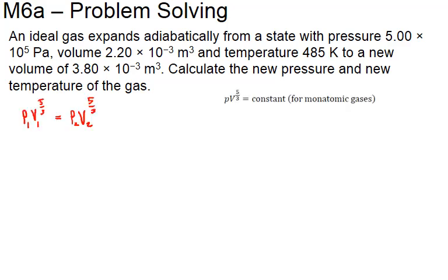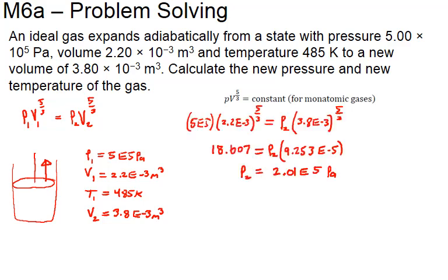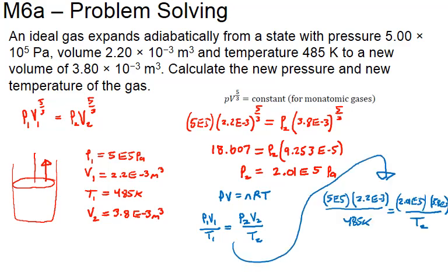Using the gas before and after with the adiabatic relation, we get a new pressure of 2.01×10⁵ Pa. From there, applying the ideal gas law with the before and after states, the new temperature comes out to 336.77 K.